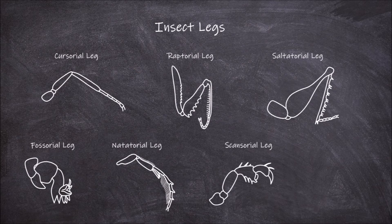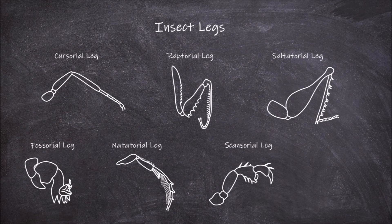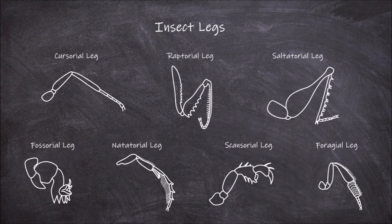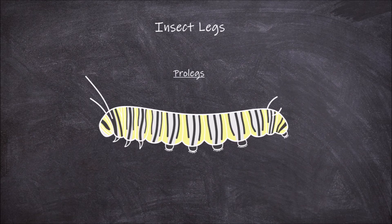Scansorial legs are legs that are modified for climbing or clinging and are observed in head lice. Phoretic legs are modified for carrying pollen, such as those seen in honeybees.